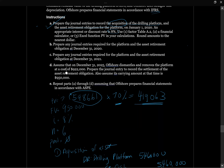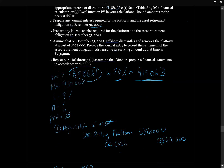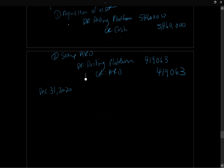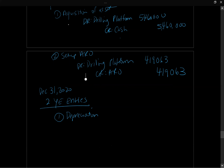Next, we need to prepare any journal entries required for the platform and the asset retirement obligation at December 31st, 2020 — just the end of the first fiscal year, not the actual retirement of the ARO. We're always going to have two year-end entries. The first one we always have is depreciation. Just like any capital asset, we need to depreciate the drilling platform. We need to be careful about what the drilling platform is on our books for, because it's on our books for the sum of both amounts.